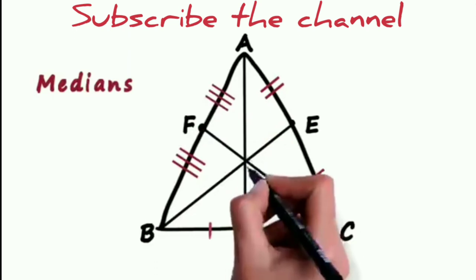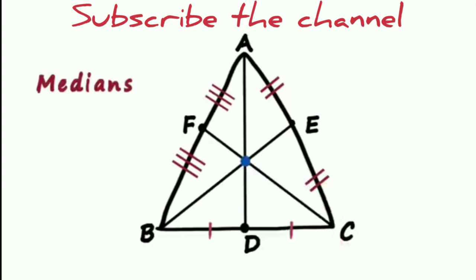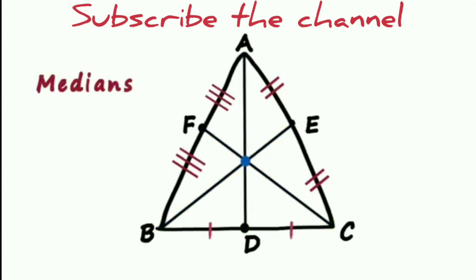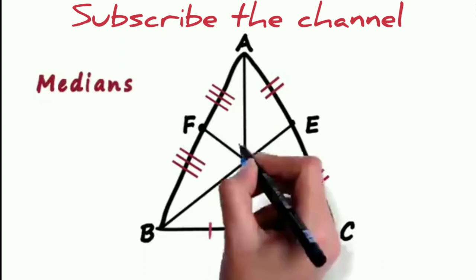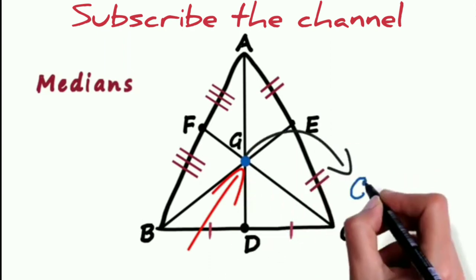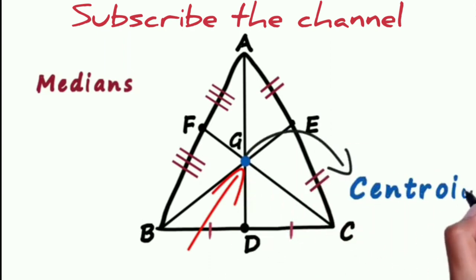So we can say all the medians are concurrent. They meet at one single point. This point G is called the centroid of the triangle.